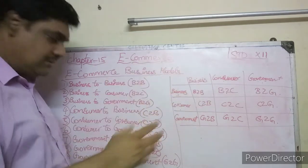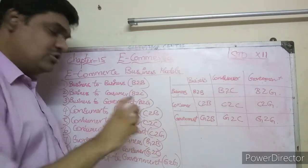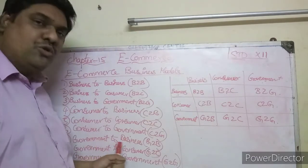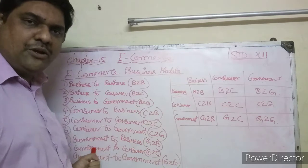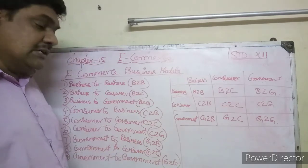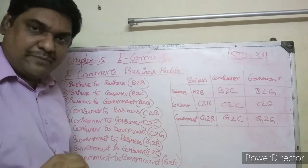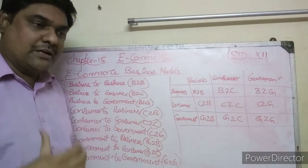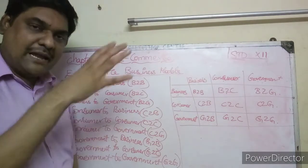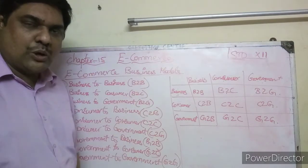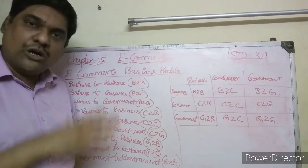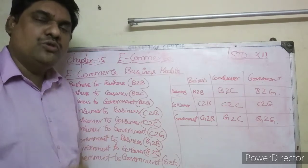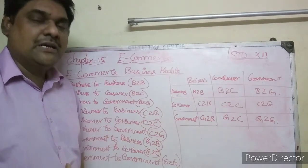Next is government to business. These are government websites where businesses can apply and register. For example, businesses can look up procedures and apply for licences or permits online. That kind of website is called a government to business website.